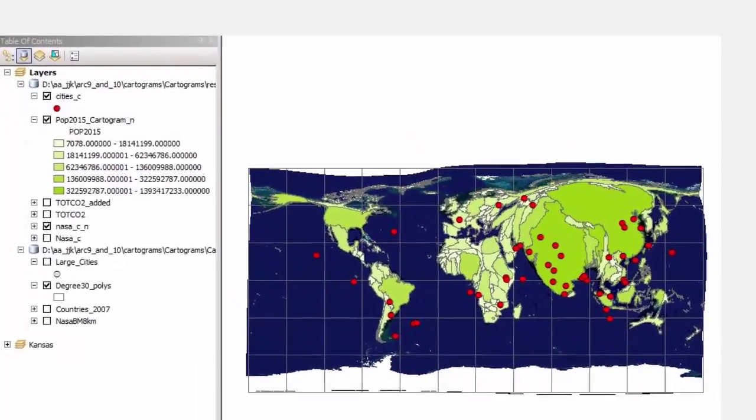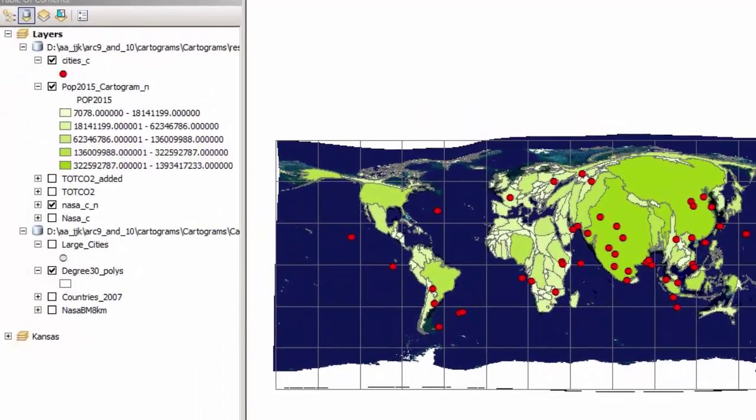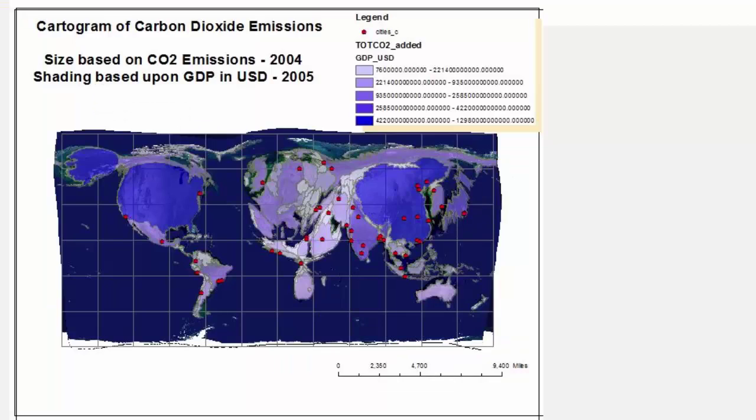In this example, I chose to map the 2015 population by country. Then I mapped the total CO2 emissions by country in 2004, in millions of metric tons, from the US Energy Information Agency. What patterns do you notice?